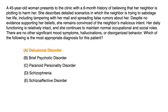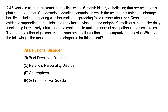Before I explain how you would pick this answer out, let's look at the question stem and highlight in red what is very important for you to understand. First, we've got a six-month history, and the symptoms are believing that the neighbor is plotting to harm her and that there's no evidence supporting these beliefs. In other words, this is a delusion — a fixed false belief.